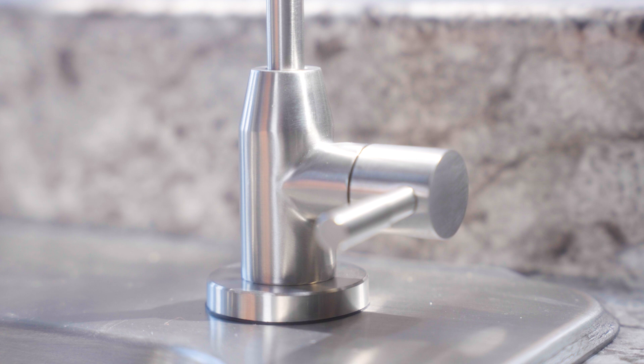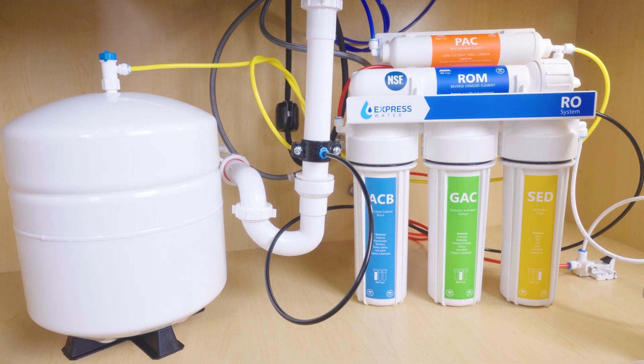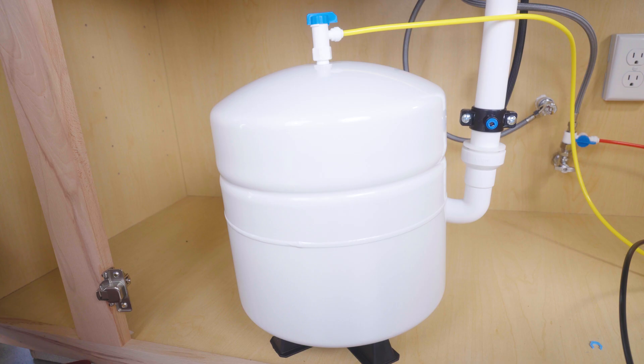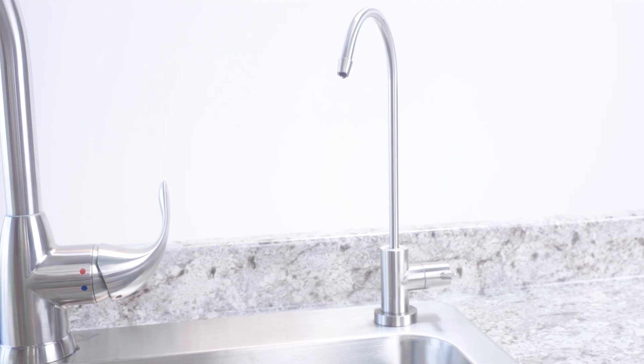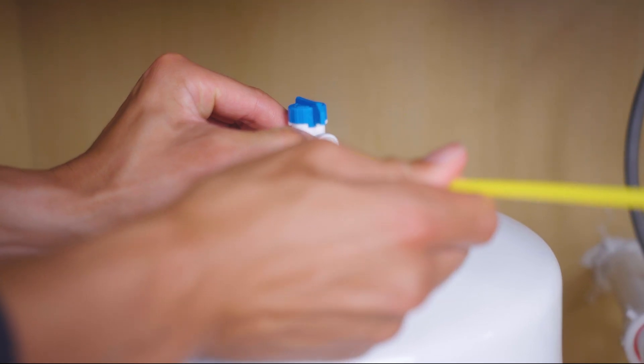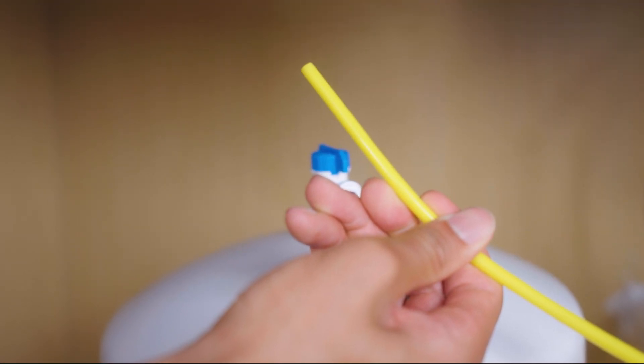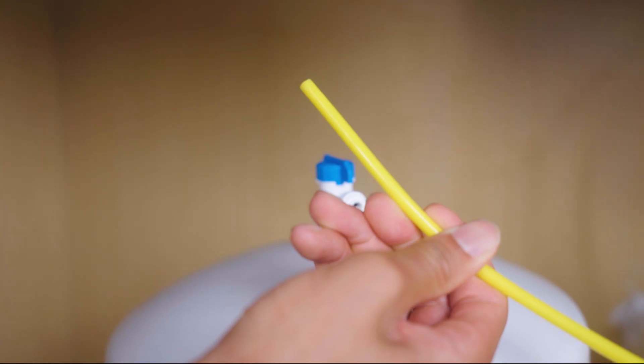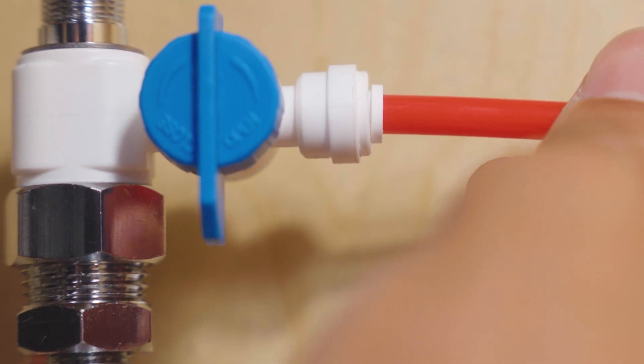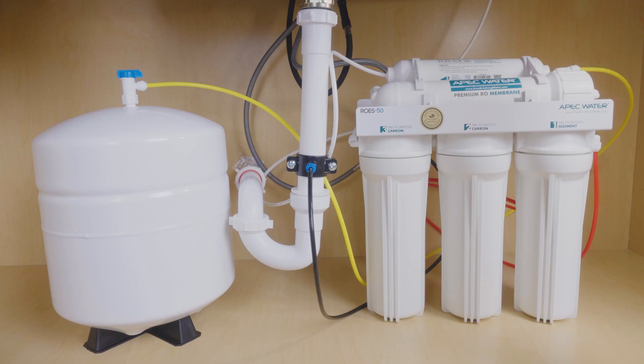If your system was just installed, wait two to three hours for the tank to fill. If no water flows after three hours, remove the yellow tubing from the tank valve. If water sprays out, your faucet may be clogged. Lastly, make sure all tubing is pushed in firmly and in the right ports.